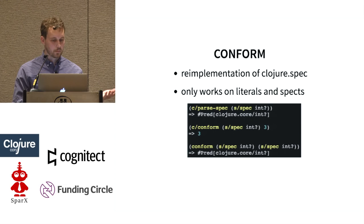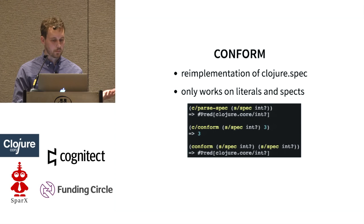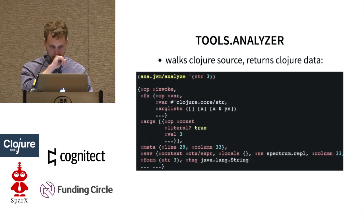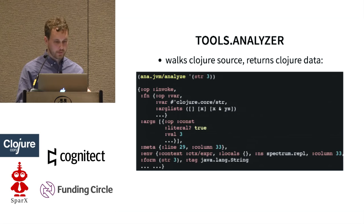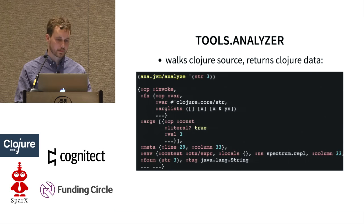The second step is tools.analyzer. Thanks to everybody who worked on that — it was a complete lifesaver. We take the analyze form, and here's just a simple string call. It takes any quoted expression and returns data: it's saying we're invoking a function, the function is the var clojure.core/string, and here are the arguments passed. This works on anything — namespace declarations, everything. The important thing is the op :invoke. There are about 20 opcodes — local variables, function parameters, everything. They're all just Clojure maps, and it's all just data.